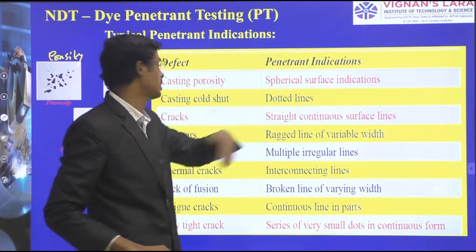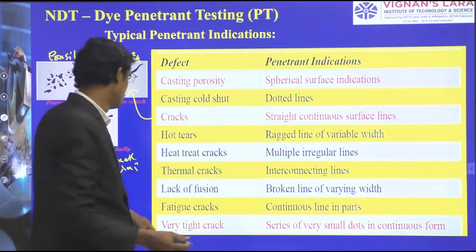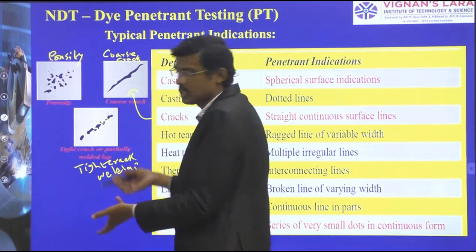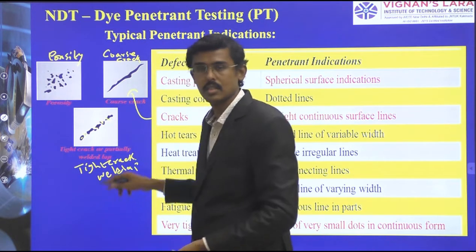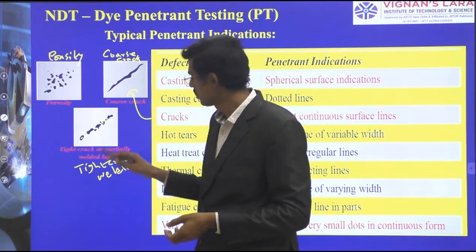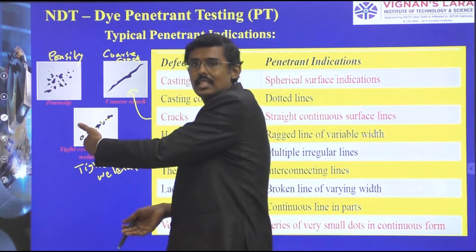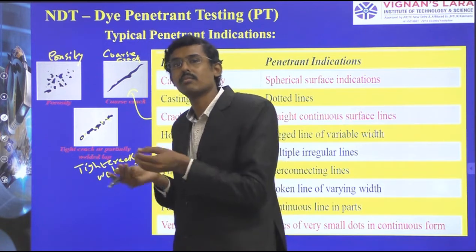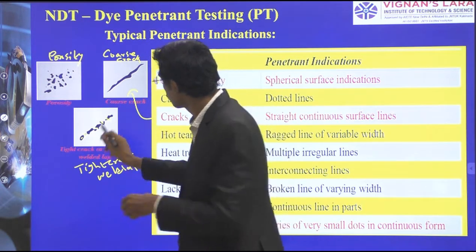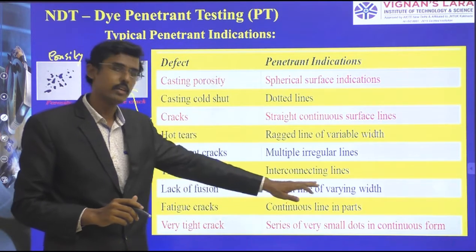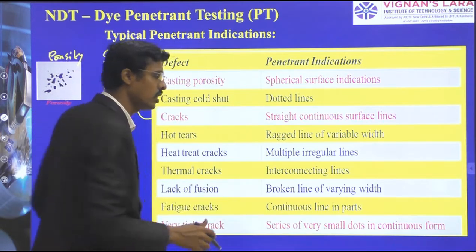Cracks appear as straight continuous surface lines. Hard hairs may appear as ragged lines of variable width. Heat-treated cracks show multiple irregular lines. Thermal cracks may appear as interconnecting lines in an intermediate discontinuity pattern — not continuous or causal cracks. This interpretation tells us how the crack was formed, so we can avoid the conditions causing it. Lack of fusion appears as broken lines of varying widths in welds. Fatigue cracks are continuous line cracks. Very tight cracks appear as a series of very small dots in continuous form.